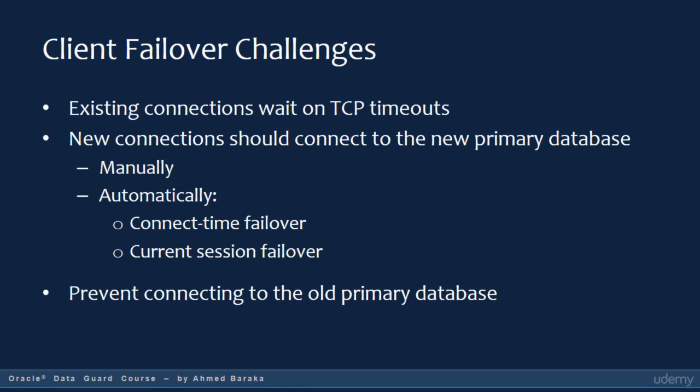When you plan for application failover, what are the problems that you need to solve? One challenge is TCP timeouts. If a host is completely down or the network to the host is unavailable, the client will wait for the TCP timeout — which could be up to 15 minutes. The same issue applies when a client wants to connect to a primary database that is not available. The second major issue is how client connections should connect to the new primary database — should this be done manually or automatically?